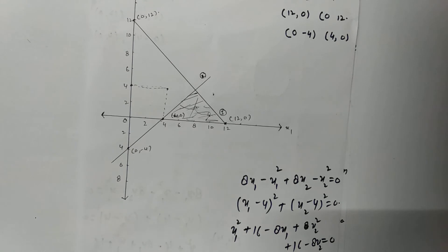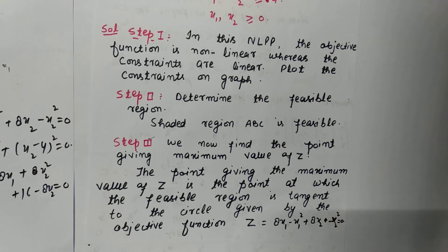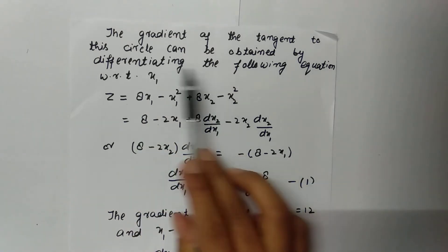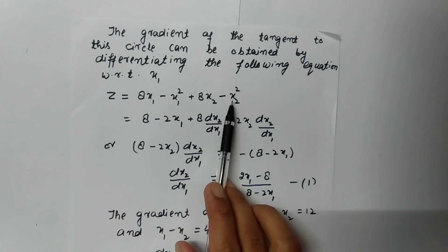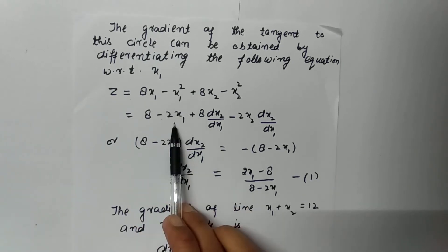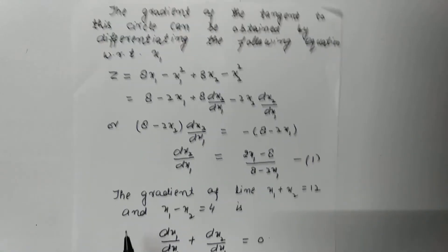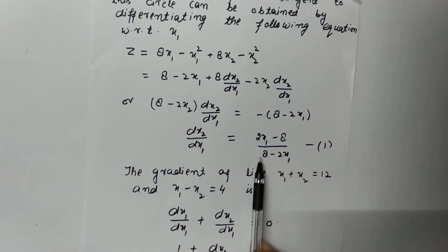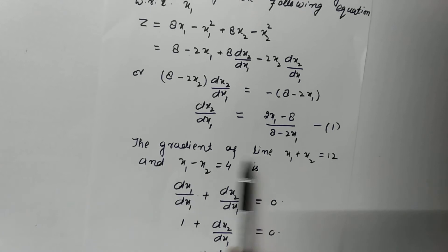Now we determine the point where the circle is tangent to the feasible region. For this, we find the gradient of the tangent, i.e., the slope. The gradient of the tangent to the circle is obtained by differentiating the objective function with respect to x1. Differentiating gives 8 − 2x1 + (8 − 2x2)(dx2/dx1) = 0, so dx2/dx1 = (2x1 − 8) / (8 − 2x2). Call this equation (1).